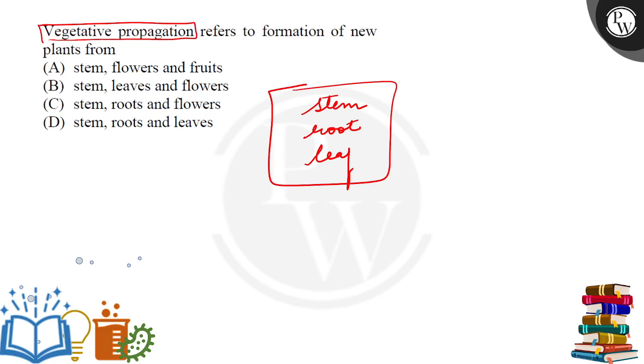If there is a flower, we will not believe that, the flower is involved in sexual reproduction. If there is a seed, it is sexual reproduction. If there is a new plant from stem, root, leaf, then we call that process vegetative propagation.